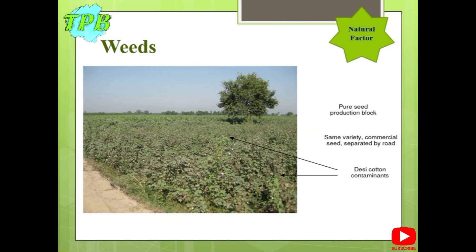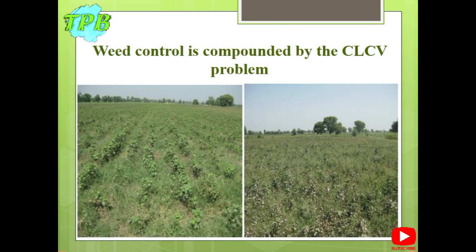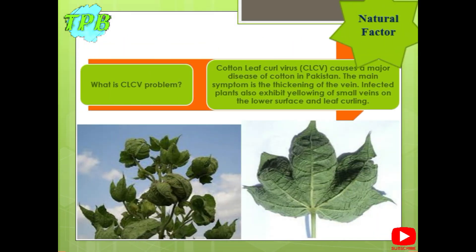Weeds are another natural factor, where local desi seed varieties may start growing as contaminants alongside HYVs of cotton, preventing the HYVs from growing fully. Weed control is compounded by the CLCV problem — Cotton Leaf Curl Virus. The more weeds in the field, the greater the chances of CLCV. The main symptom of CLCV is thickening of the leaf veins; the infected plant also exhibits yellowing of small veins on the lower surface and leaf curling. When fruition takes place, cotton bolls may turn black, brown, or yellow, reducing quality and profits for the farmer.